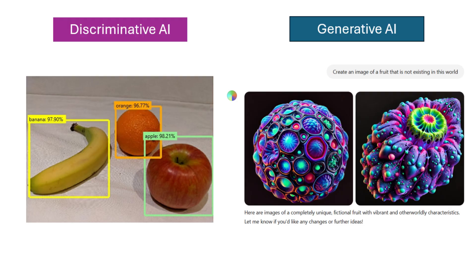Now let's break AI into two main categories: discriminative AI and generative AI. Discriminative AI helps recognize data by distinguishing between different data — for example, identifying apple versus banana in an image. Generative AI, on the other hand, creates entirely new content — for example, it might generate an image of a never-seen fruit.